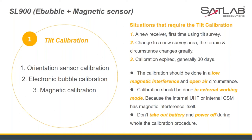Let's first introduce the SL900 tilt survey function. Because the receiver has built-in sensors, the SL900 must be calibrated before using the tilt survey function. There are three types of calibration: electronic bubble, orientation sensor, and magnetic calibration. However, it is not necessary to calibrate before each use — only in the following situations: if you use a new receiver for tilt survey the first time, you must calibrate. Second, if you change to a new survey area and the environment changes greatly.